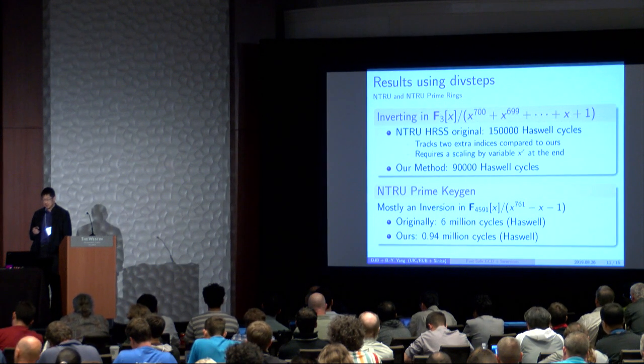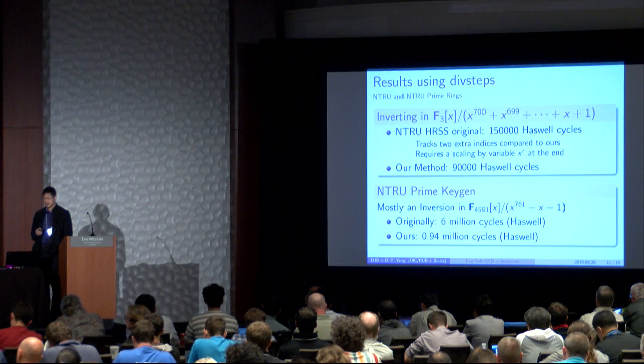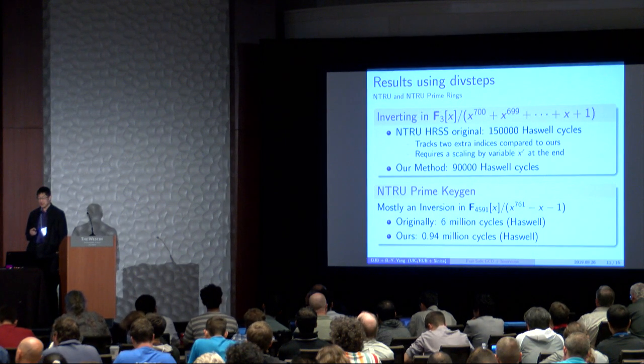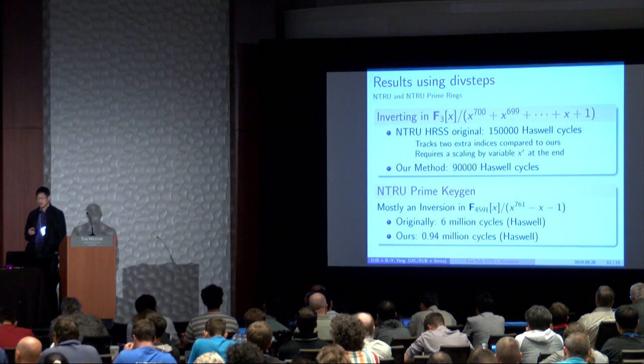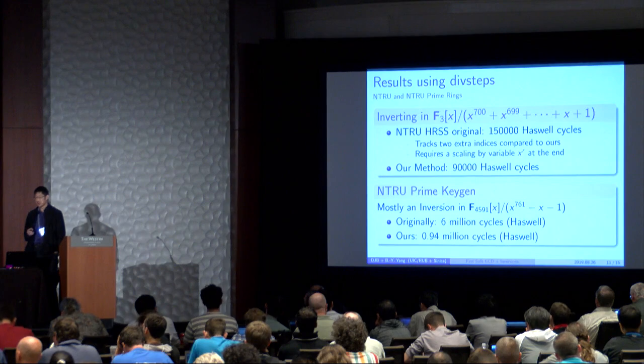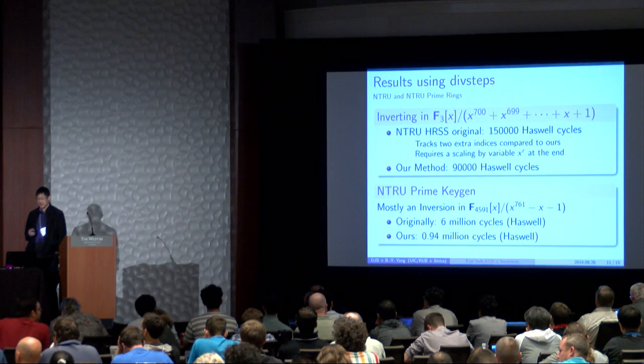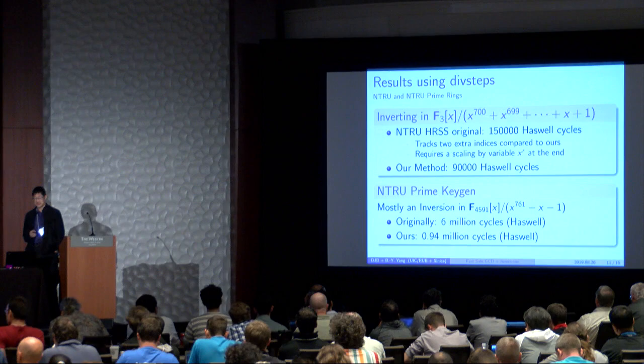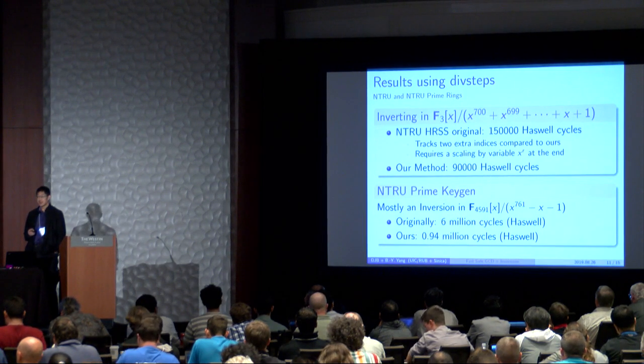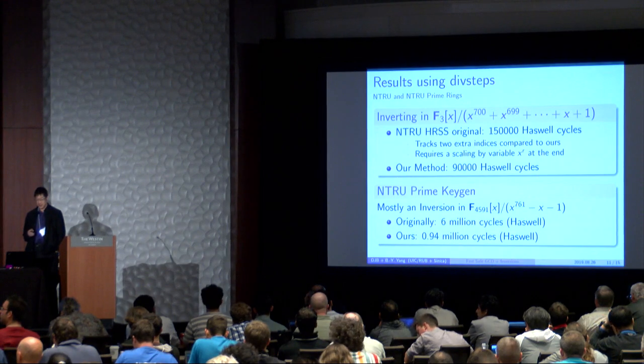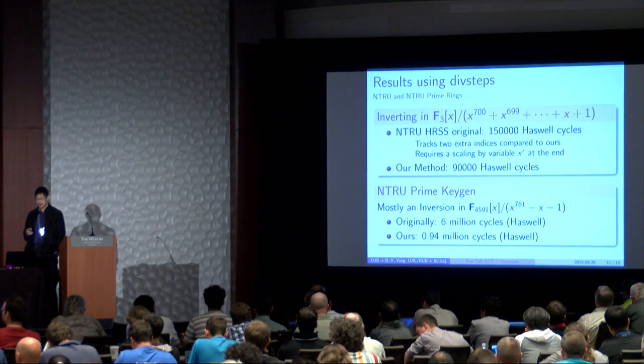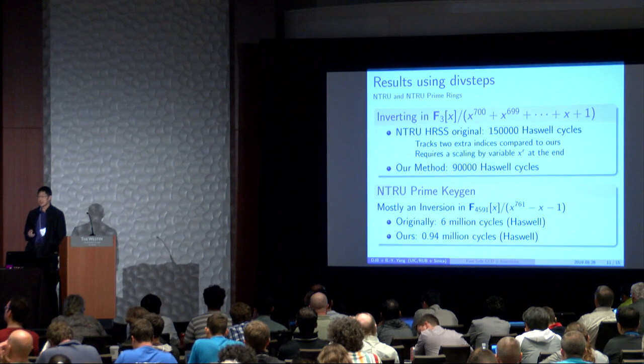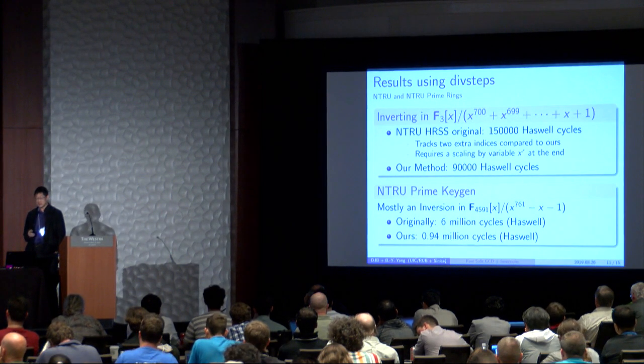So if we just do divsteps, so for example, for NTRU and NTRU prime rings, we can do inversion in F3 of X over X to the 700 plus X to the 699 plus all the way to X plus 1. So NTRU HRSS original code had about 150,000 Haswell cycles. Now this algorithm tracks two R indices compared to ours, and it requires a variable scaling by X to the R at the end. And if we just use our divstep method, this takes about 90,000 Haswell cycles.